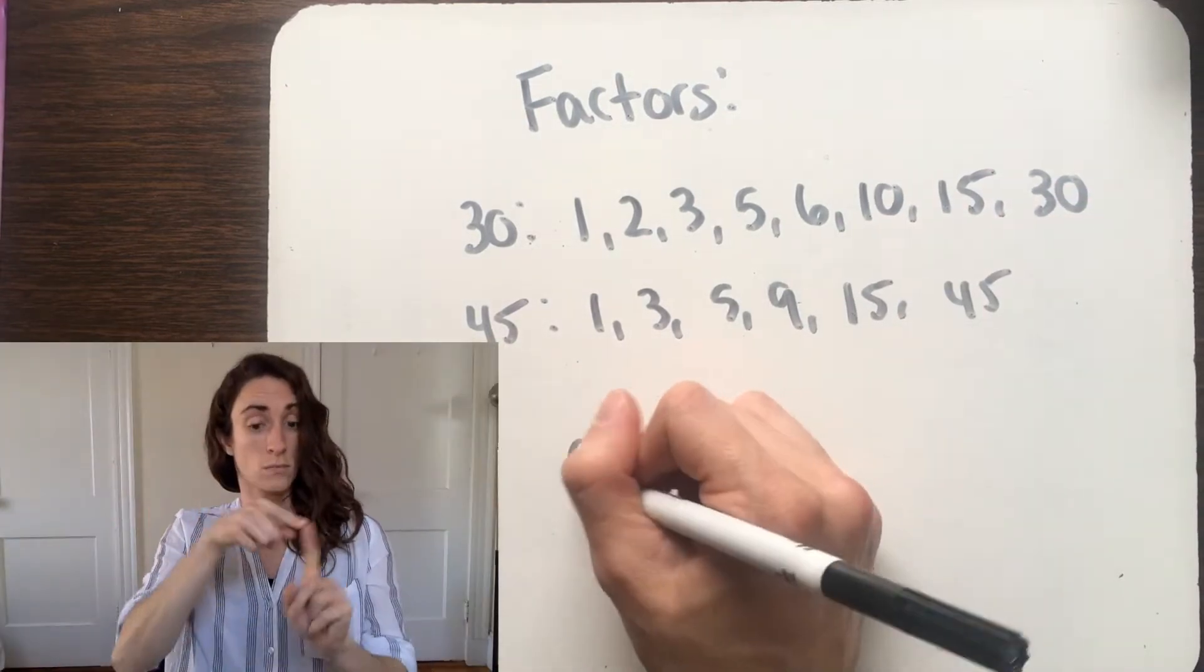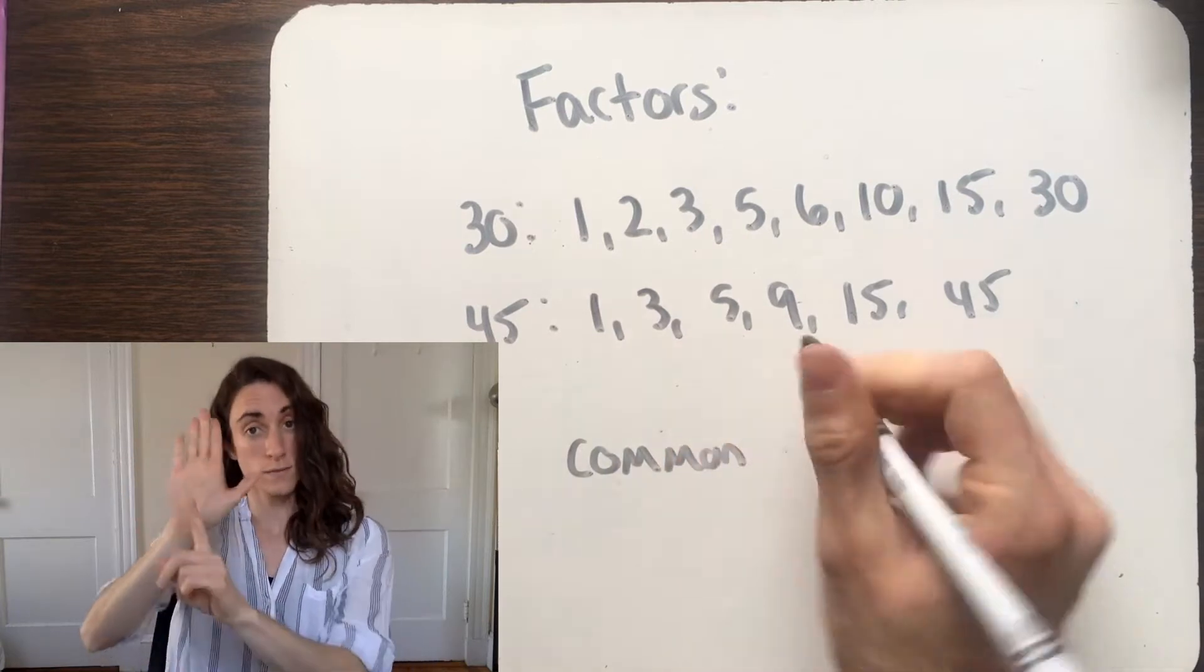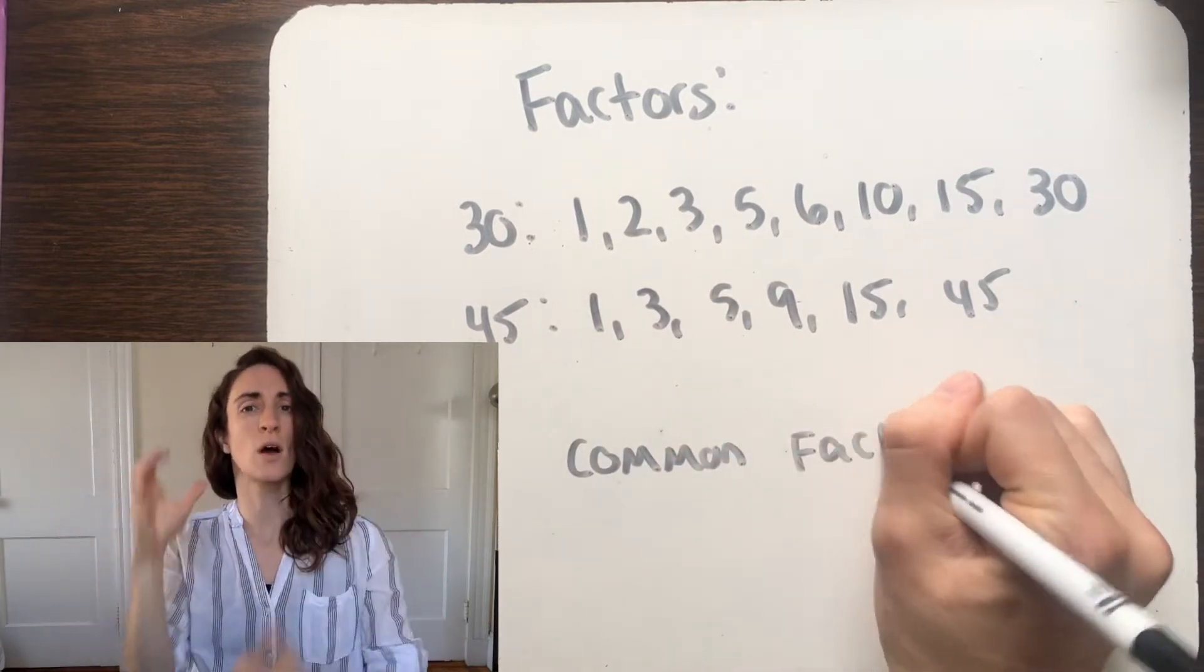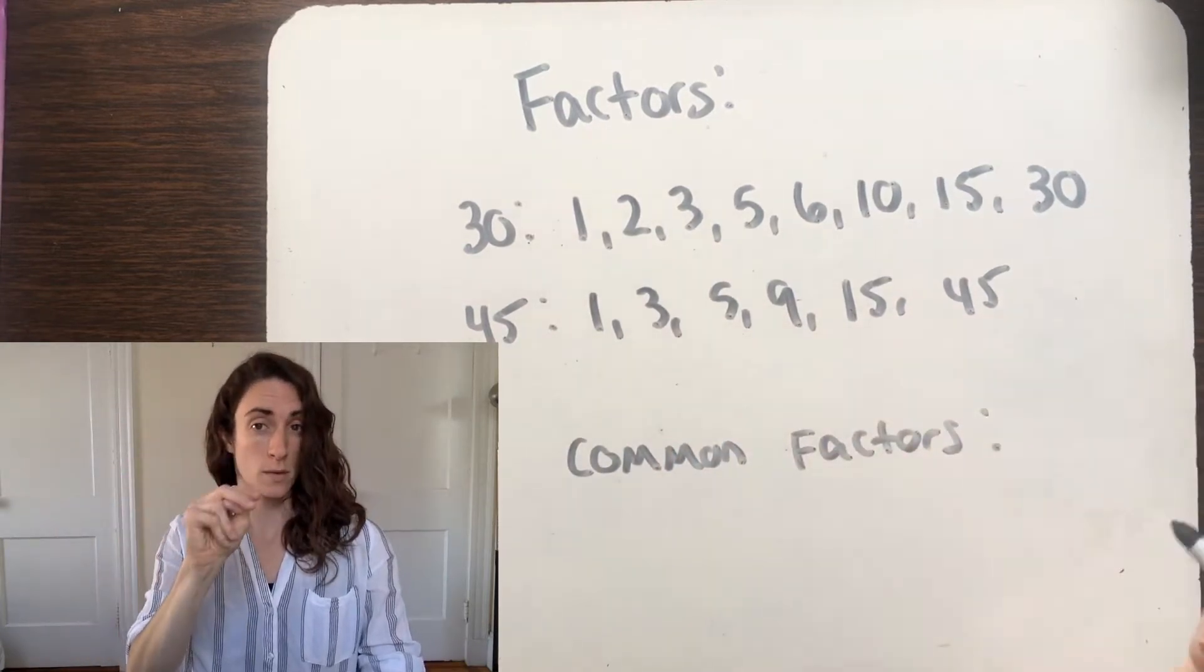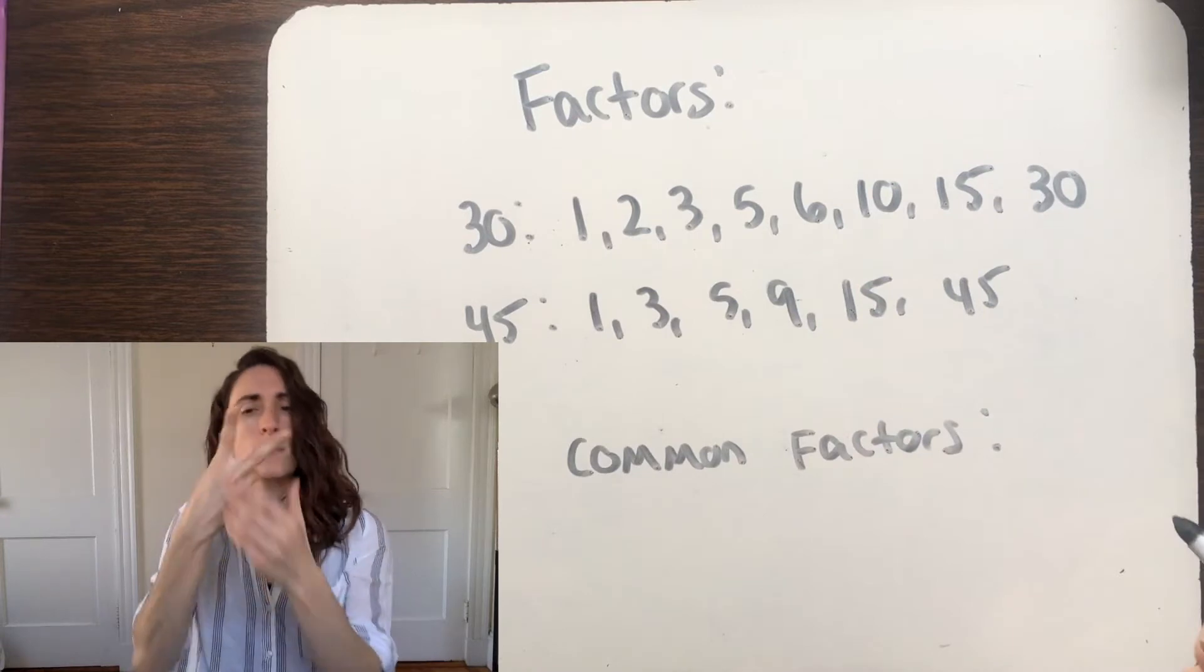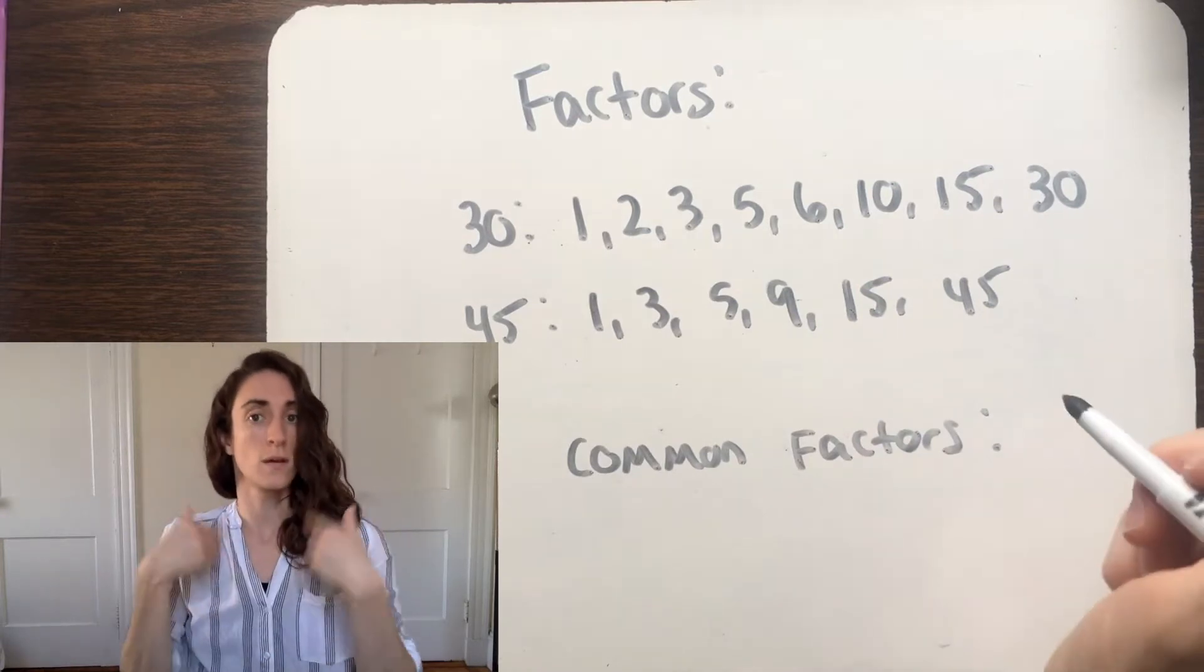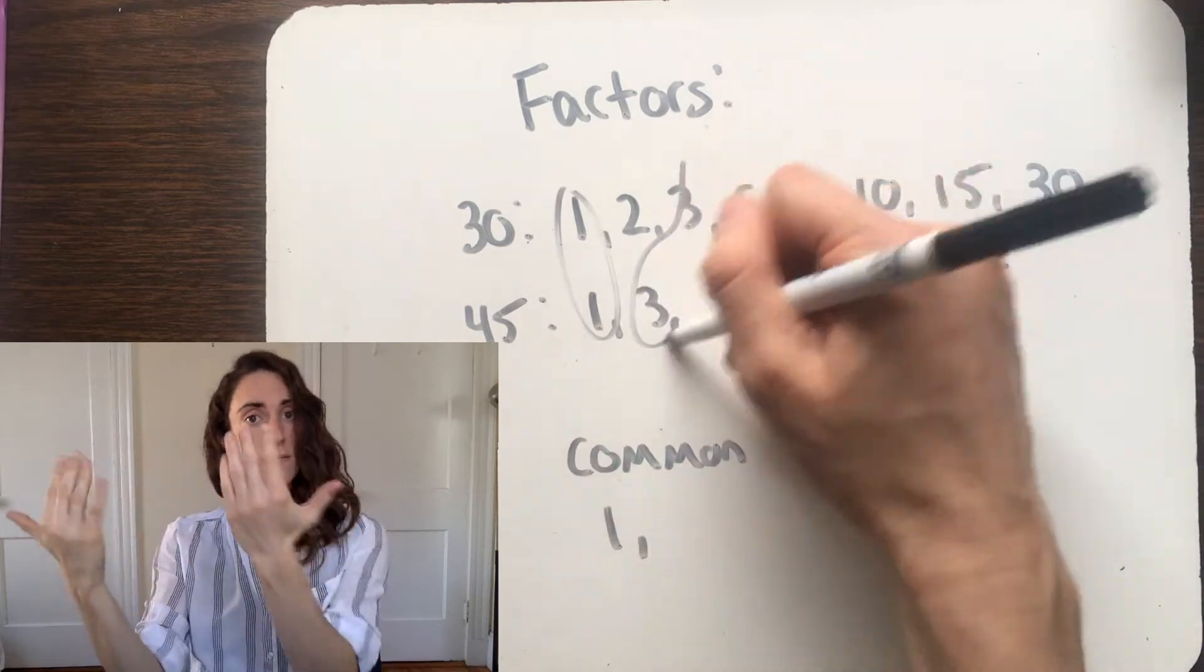Now that we have a list of both the factors of 30 and the factors of 45, we can go ahead and see what common factors there are, meaning what factors both numbers have. Both numbers have factors of 1, 3, 5, and 15.